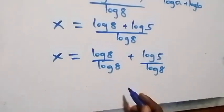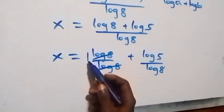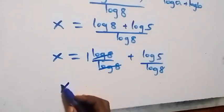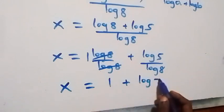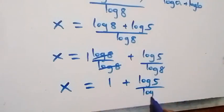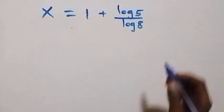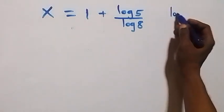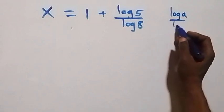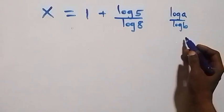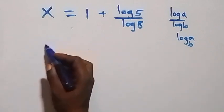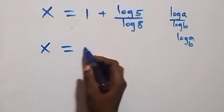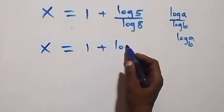Then log 8 cancels each other giving one, so we have x equals to one plus log 5 over log 8. Applying the change of base formula — log a over log b equals log a to base b — what we have here can be written as x equals to one plus log 5 to base 8.